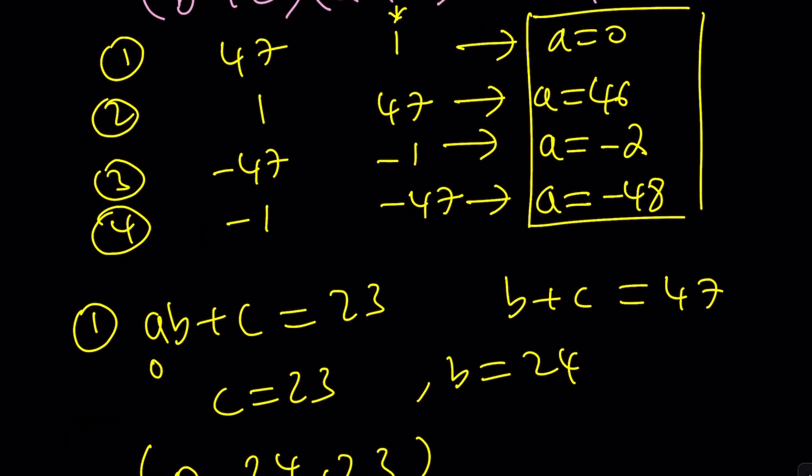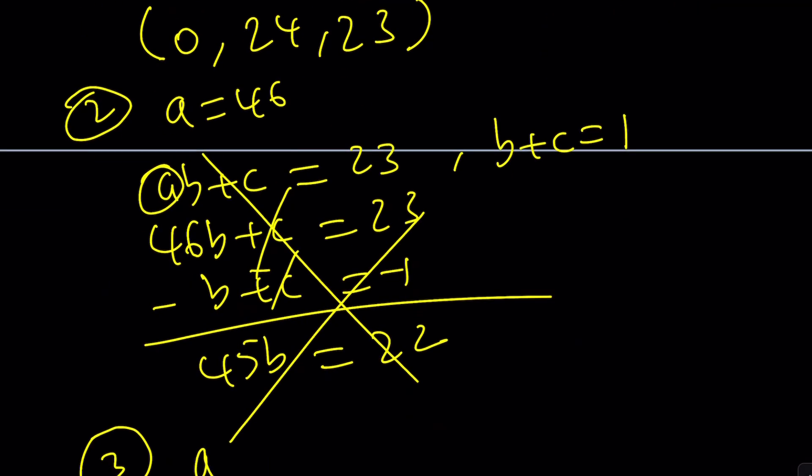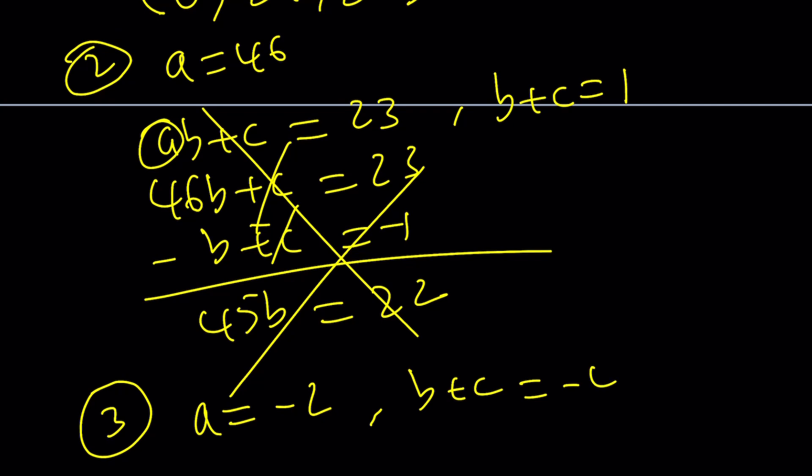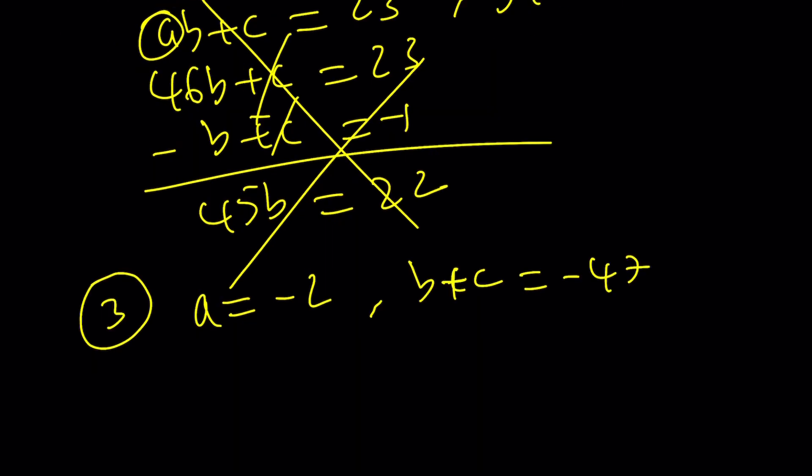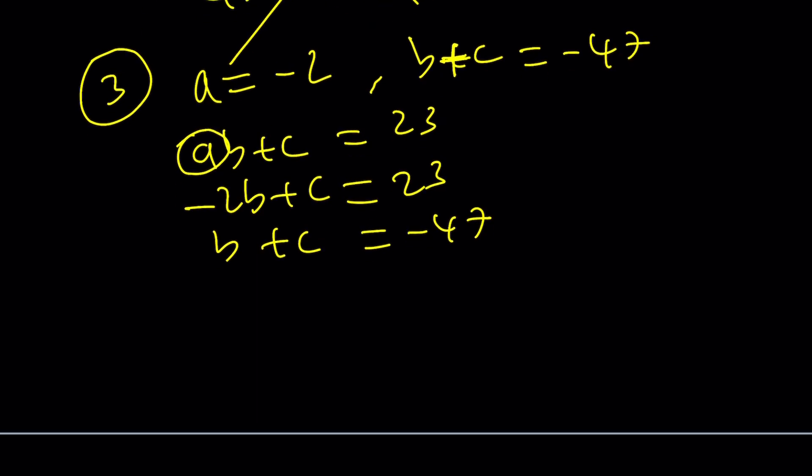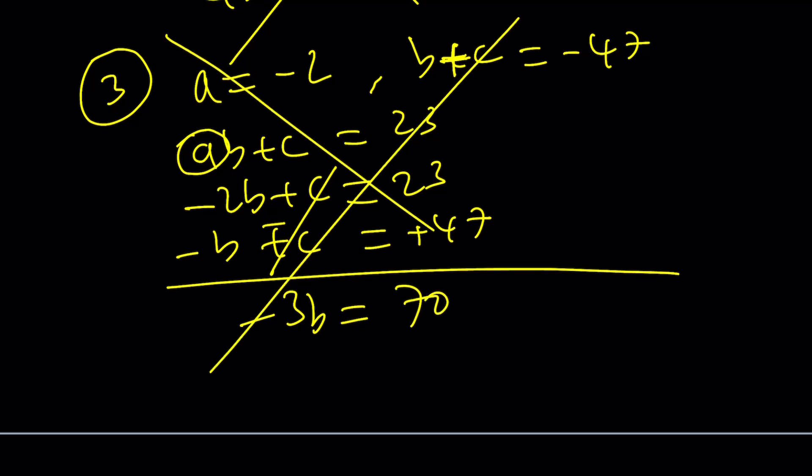Let's look at case three. A is negative 2. And B plus C is, I think, negative 47. We also know that AB plus C is 23. If A is negative 2, we get negative 2B plus C is equal to 23. And then along with B plus C equals negative 47. Now again, we're going to negate one of these equations. Let's negate the second one and then add these. C cancels out, negative 3B equals 70. Again, B is not going to be an integer. This method also fails. I mean the third case.